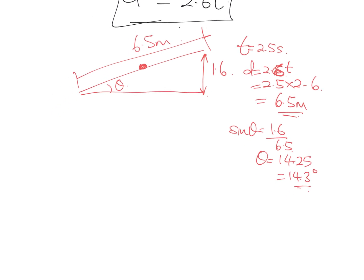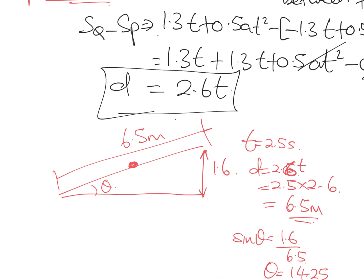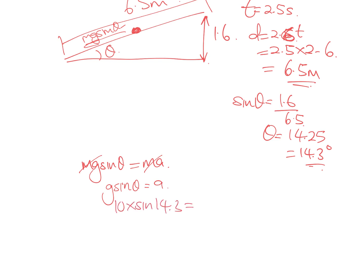To find the acceleration down the plane, resolve forces: Mg sin θ = MA, so the masses cancel and g sin θ = A. Therefore A = 10 × sin 14.3° = 2.46 m/s².